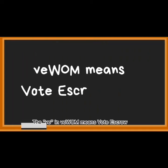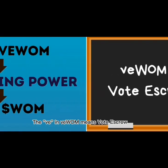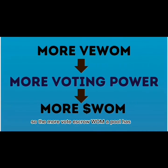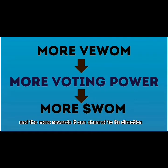The VE in VE Womb means vote escrow. So the more vote escrow Womb a pool has, the more voting power it has, and the more reward it can channel in its direction.